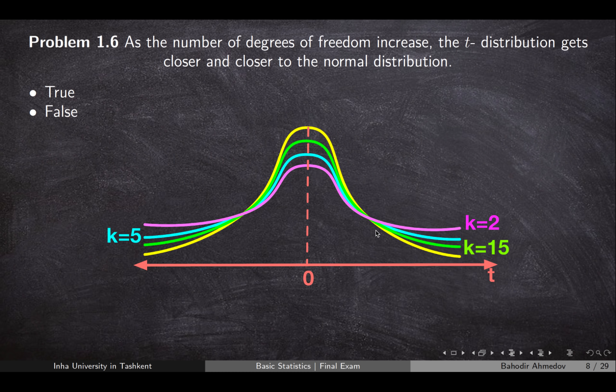Problem number six is also theoretical. As the number of degrees of freedom increases, the t-distribution gets closer and closer to the normal distribution. From the graph we can see that as we increase k, it gets closer and closer to the normal distribution — so this statement is true.